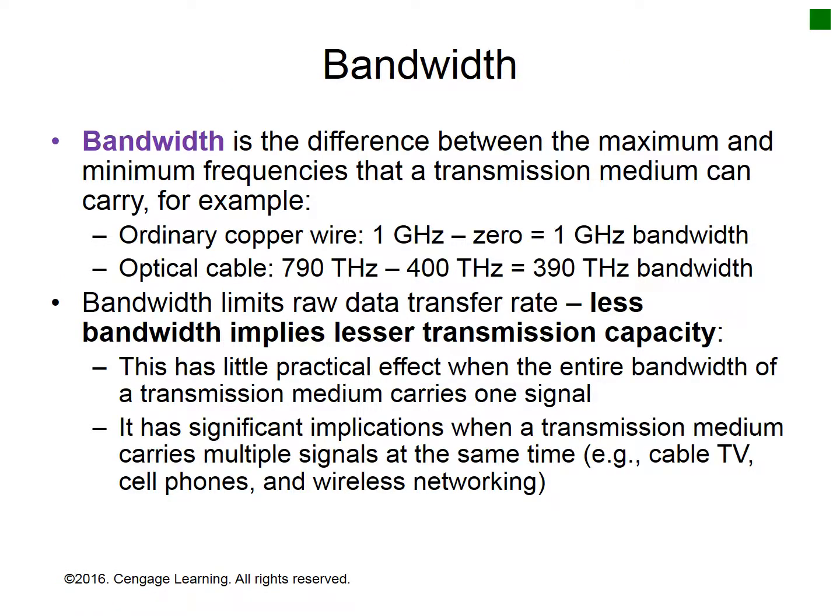The difference between a signal's maximum and minimum frequency is called the signal bandwidth. The difference between the maximum and minimum frequencies that can be propagated through a transmission medium is called the medium bandwidth. Data transmission with analog or digital signals has the same basic relationship between bandwidth and data carrying capabilities. For analog signals, wider bandwidth enables the transmission medium to carry multiple signals of different frequencies at the same time, which merge to form a composite signal that occupies more bandwidth than any of the component signals. Because each frequency carries a different data stream, data transfer rate increases as bandwidth increases.